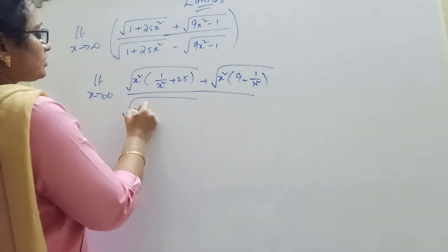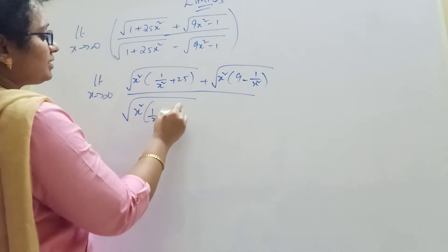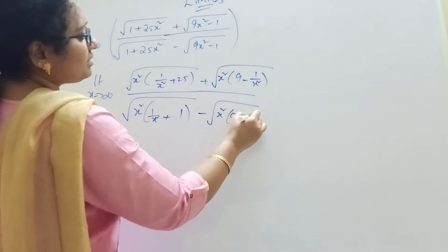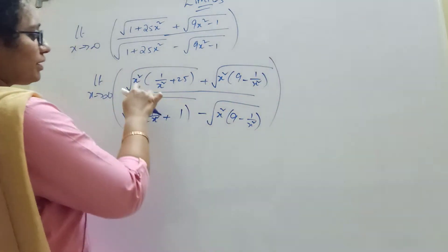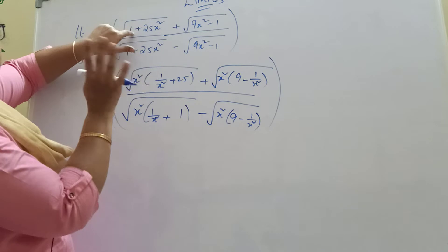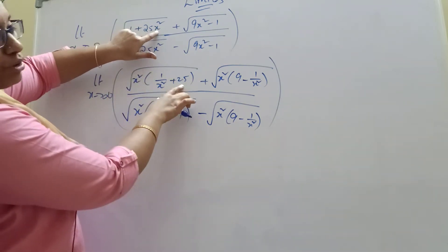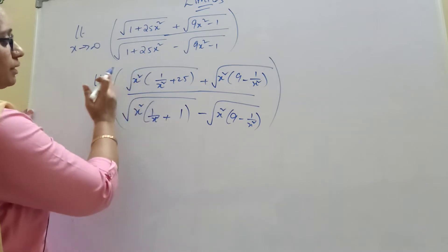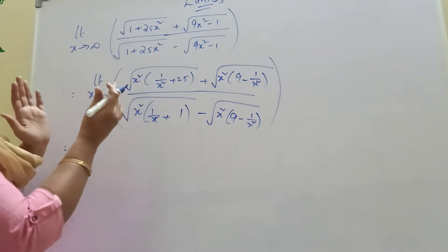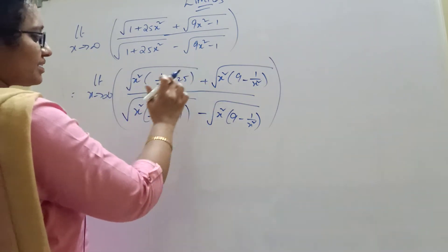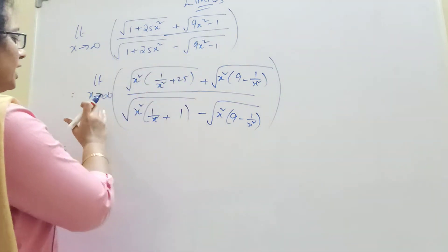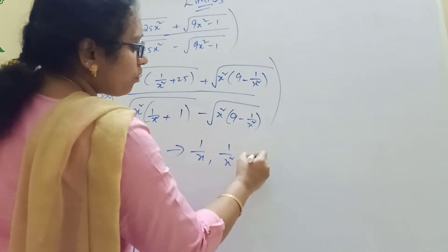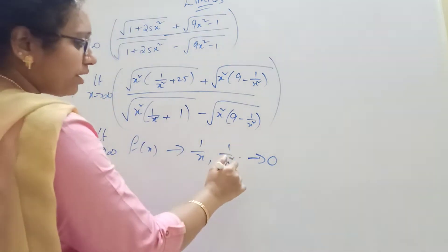So x square, we are discussing 1 by x square plus 1. x square minus here, x square — 9 minus 1 by x square — and x square. Only 2 by x square and x square. That will be 1 by x square, so minus 1 by x square. So we have to carry this common. Next: limit x tends to infinity, f of x — 1 by x, 1 by x square and so on — tends to 0.